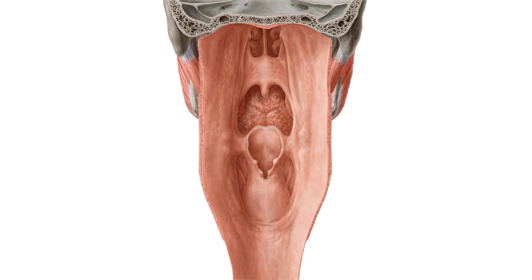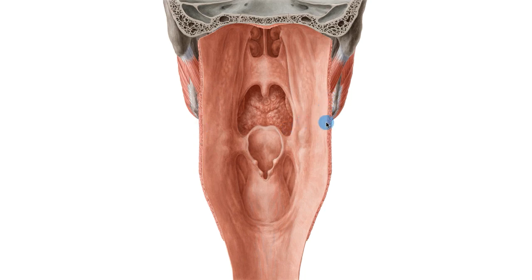The pharynx is a muscular column that is located posterior to the oral cavity and also the nasal cavity and larynx, running between the oral cavity and the esophagus below. The pharynx is lined by mucosa and the muscle fibers that make up the walls circularly on the outside and longitudinally on the inside.